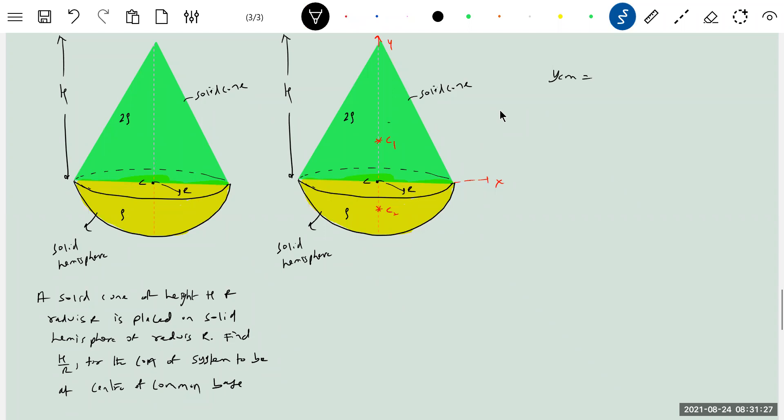YCM equal to mass of this, we don't know, M1, mass of this M2. M1, so this will be H by 4 from the base. M2 minus 3R by 8, divided by M1 plus M2.